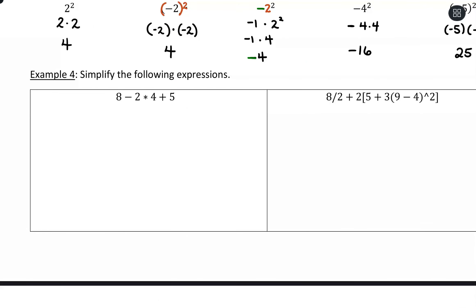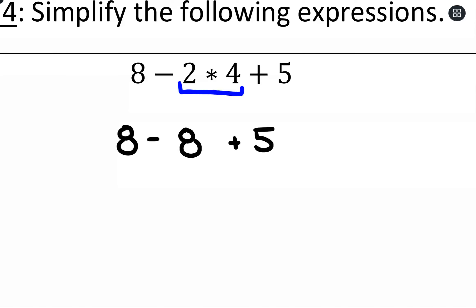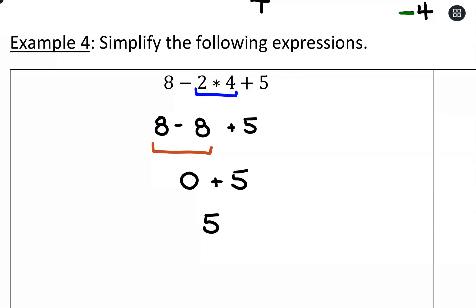Let's look at some quick examples of simplifying using order of operations. With this first one, there are no parentheses and no exponents, so we look for multiplication or division — there's 2 times 4. We keep everything else the same, compute 2 times 4 to get 8, and then we have 8 minus 8 plus 5. Going left to right: 8 minus 8 is 0, then 0 plus 5 gives a simplified value of 5.